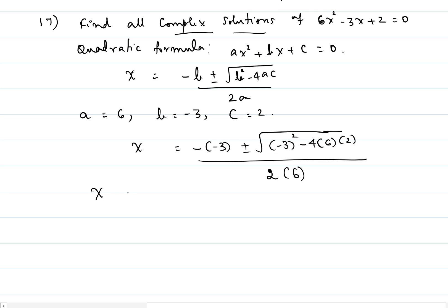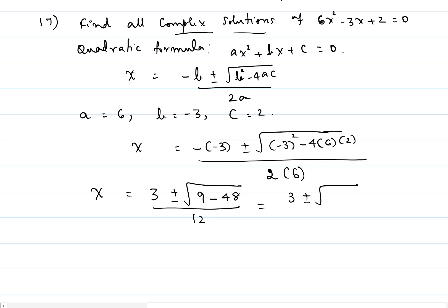So x would be equal to positive 3 plus or minus square root of 9 minus 4 times 6 times 2 — that would be 48 — divided by 2 times 6. That gives us 3 plus or minus square root of 9 minus 48, which is negative 39, divided by 12.